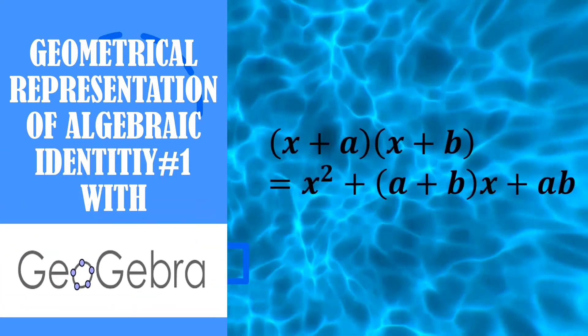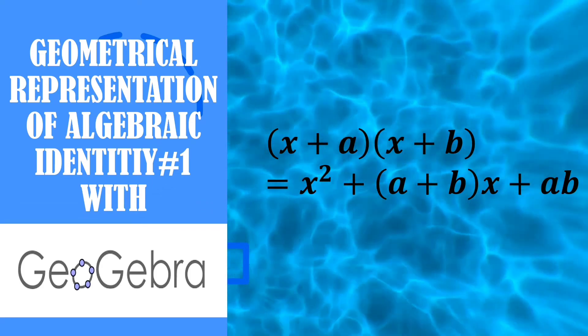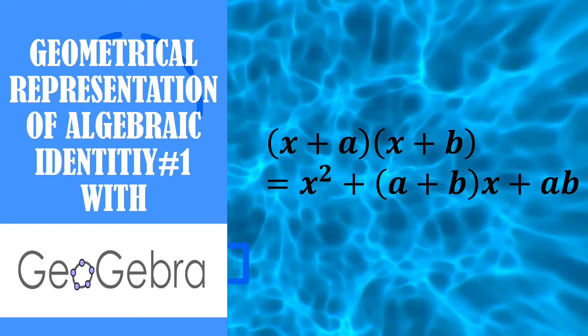The identity is (x + a)(x + b) = x² + (a + b)x + ab.